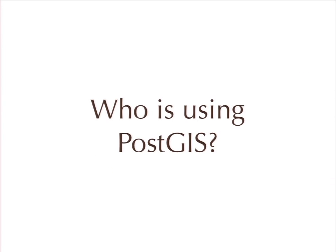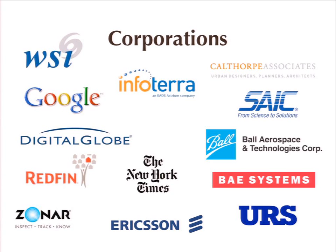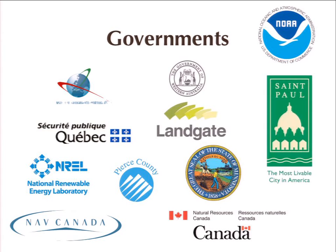Who's using PostGIS? On the private sector side: WSI (the Weather Network), the New York Times, InfoTerra, Digital Globe, SAIC, Ball Aerospace, startups like Redfin and Zonar. On the governmental side: the French and Canadian National Mapping Agencies, Portugal, regions like Minnesota and Quebec, local governments like Pierce County, and quasi-governmental outfits like NREL and Nav Canada.